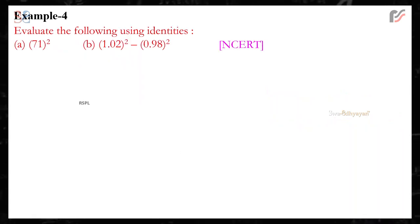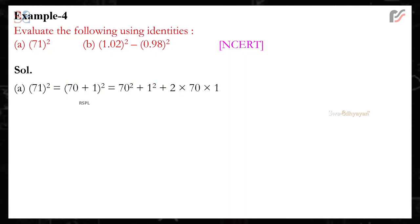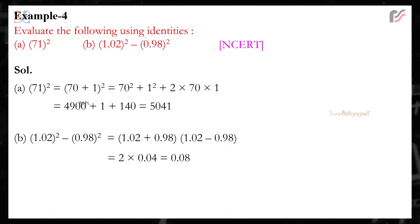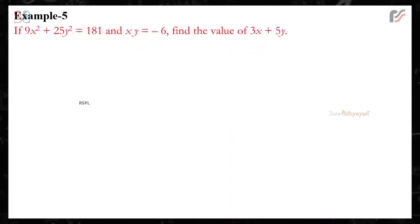Example 4: Evaluate the following using identities. A: 71² = (70 + 1)² = 70² + 1² + 2 × 70 × 1 = 4900 + 1 + 140 = 5041. B: 1.02² − 0.98² = (1.02 + 0.98)(1.02 − 0.98) = 2 × 0.04 = 0.08.